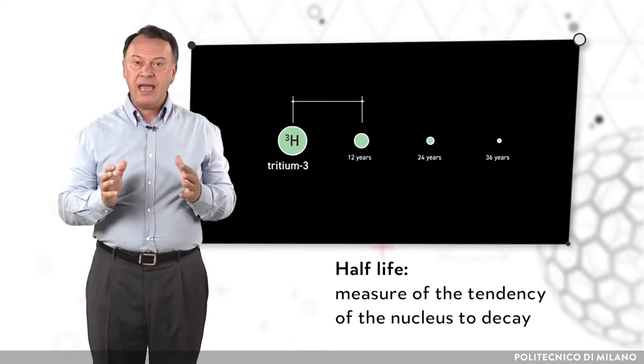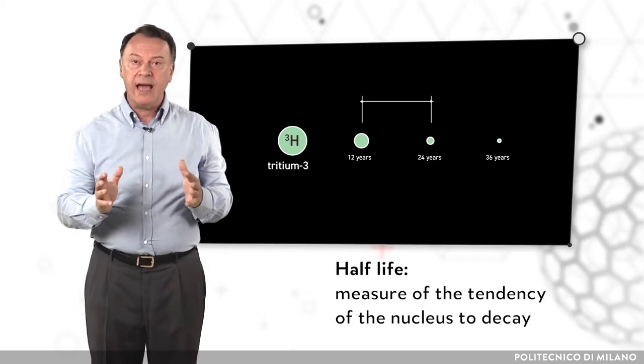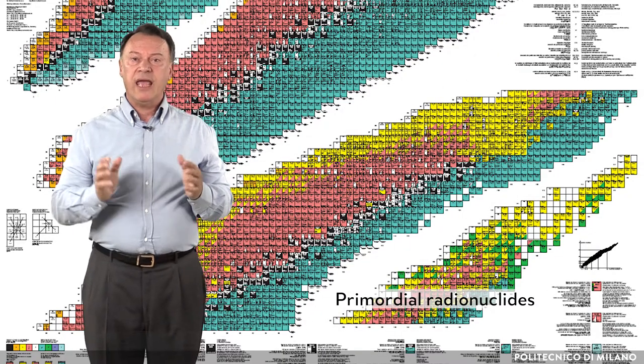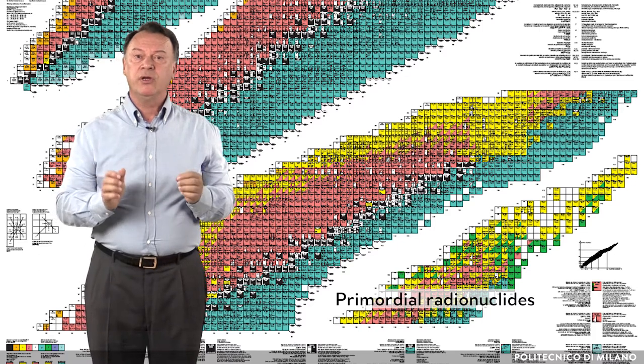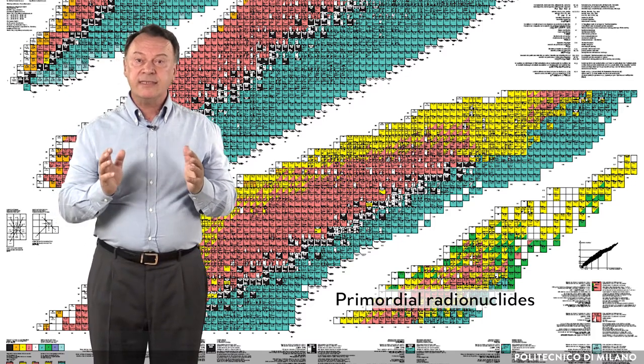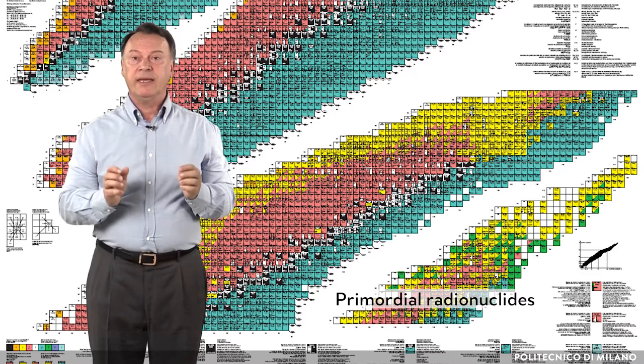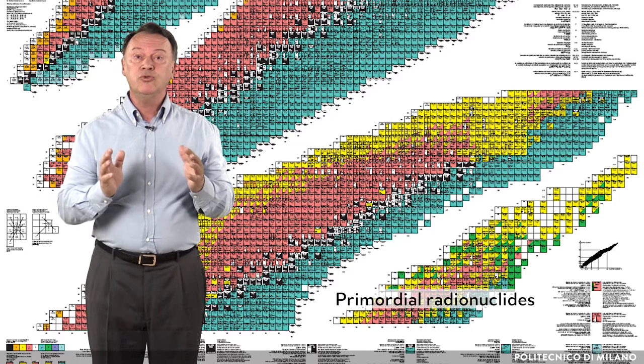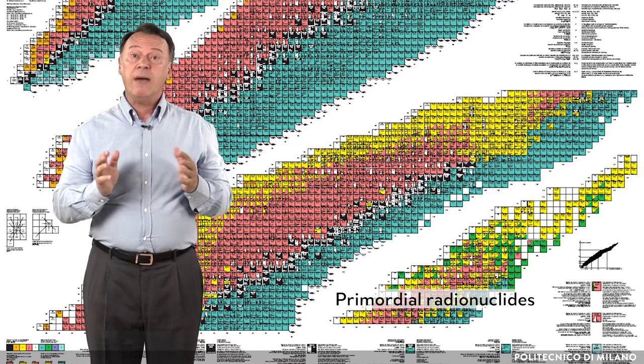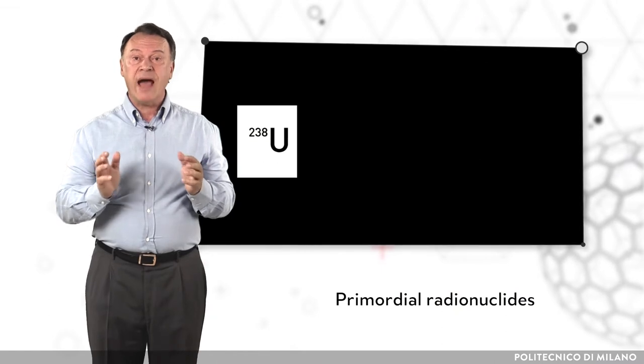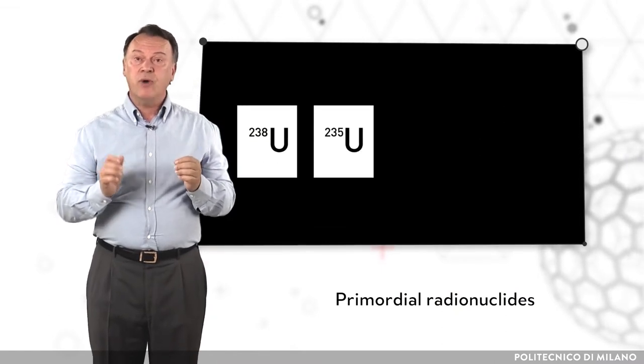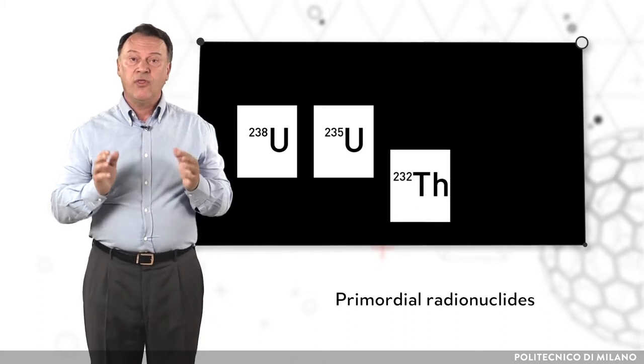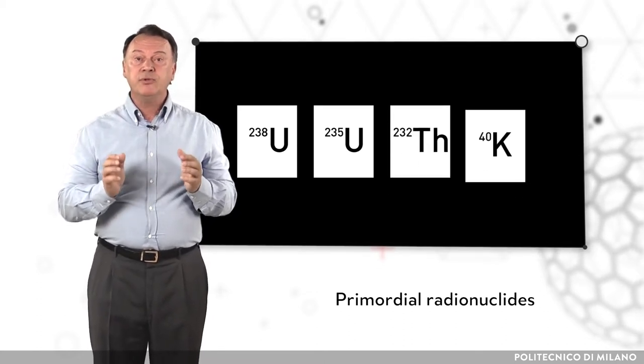The half-life is the time required for one half of the nuclei to undergo transitions. Natural radioactivity on the Earth is due to three major categories of radionuclides. Primordial radionuclides have half-lives comparable with the age of the Earth. They exist since the Earth was formed and they have not completely decayed due to their long half-life. Among this category there are uranium-238, uranium-235, thorium-232 and potassium-40.